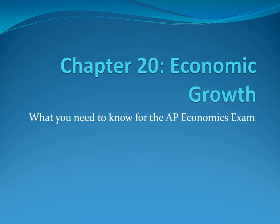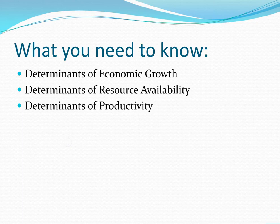My name is Dylan and welcome to the penultimate chapter of the Barron's AP Economics book, Chapter 20. I will be covering what you need to know for the AP test. In this chapter, you will only need to know three topics: the determinants of economic growth, resource availability, and productivity.